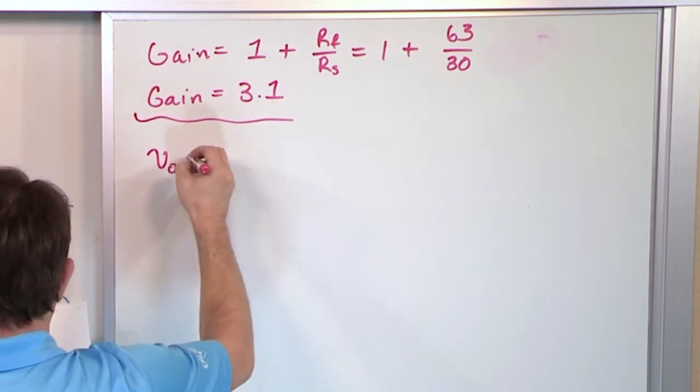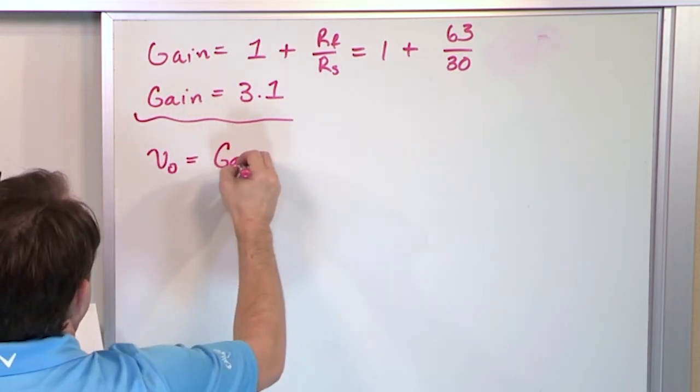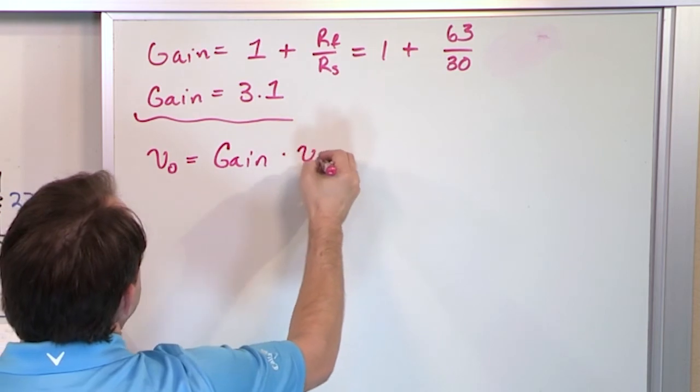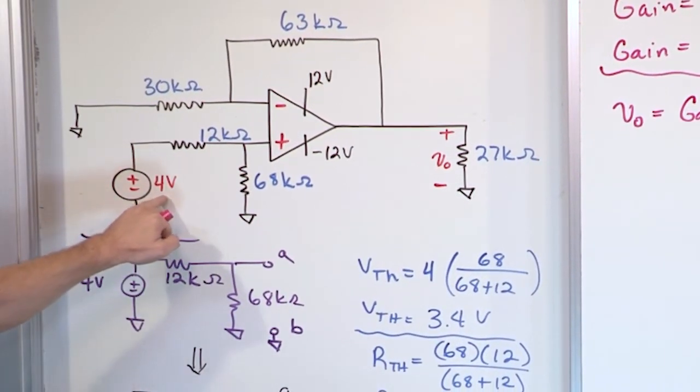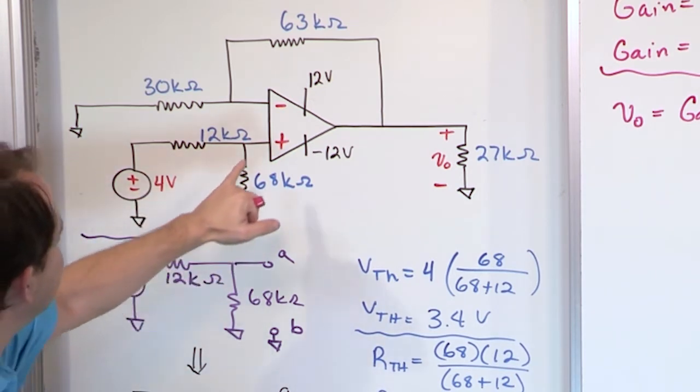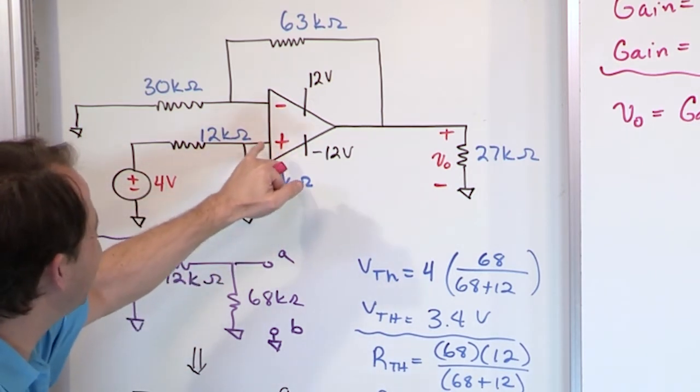So to find the output voltage, it's very simple. It's going to be the gain times the input voltage. However, as I've said about 25,000 times, do not use what's in the circuit. You have to use the Thevenin equivalent because ultimately what you're interested in is what is the voltage here at this point.